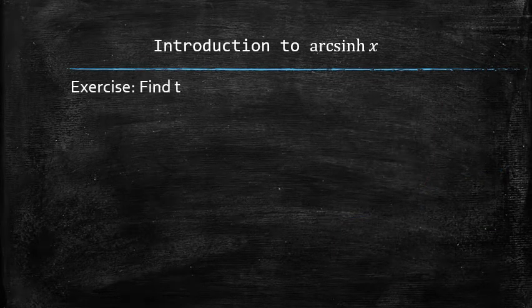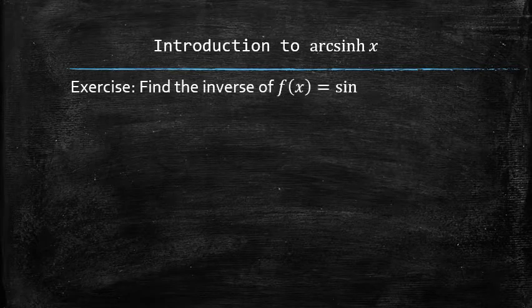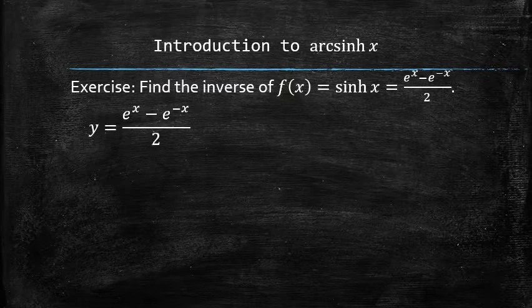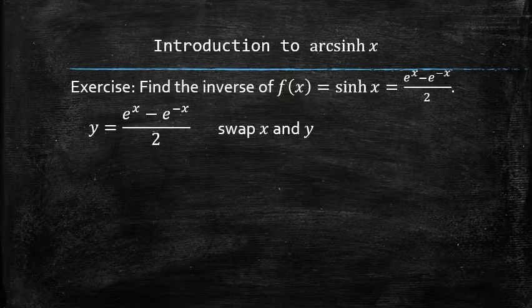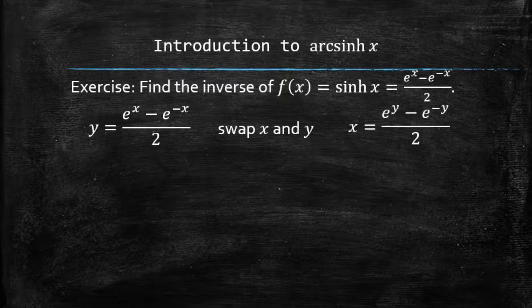Let's find the equation of the inverse of the hyperbolic sine function. To find the inverse, we first swap the x and y in the equation. And now the goal is to isolate the y variable. We multiply both sides by 2.